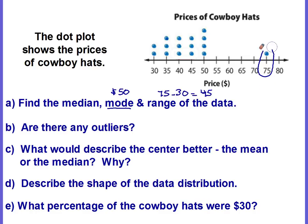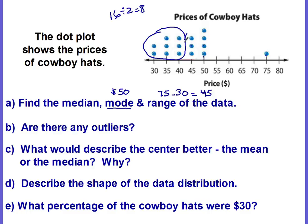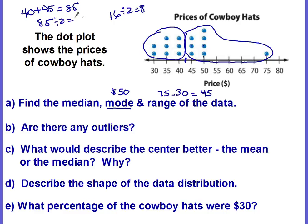Now let's find the median. The median means the middle. I'm going to count: there are 1, 2, 3, 4, 5, 6, 7, 8, 9, 10, 11, 12, 13, 14, 15, 16 — sixteen pieces of data. I want to split it in half, which gives me 8. So the lower 8 dots represent the lower half, and the upper 8 represent the upper half. There is no dot in the middle, so the middle falls halfway between the 40 and 45. We add those: 40 plus 45 is 85, then divide by 2 — 85 divided by 2 is 42.5. So the median would be $42.50.